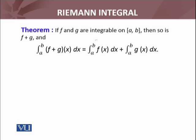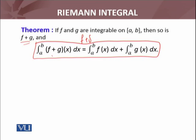Let's see what the theorem states. If f and g are integrable on [a, b], then so is f plus g. There are two parts of the theorem. The first part is I have to show that f plus g is integrable. The second part is I have to show that the integral of f plus g equals the integral of f plus the integral of g.